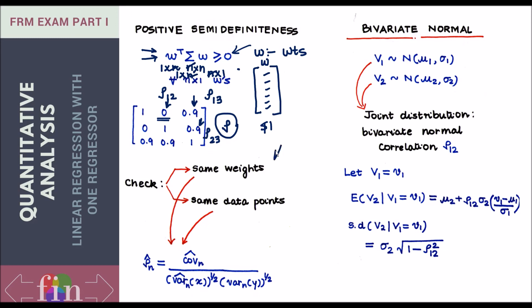To ensure positive semi-definiteness, check two things. First, when computing correlations, use the same data points — the same look-back window — to compute your covariance and your two standard deviations. Second, use the same weighting scheme. For example, if you compute covariance using EWMA, do not use standard deviations from GARCH. Do not mix approaches.